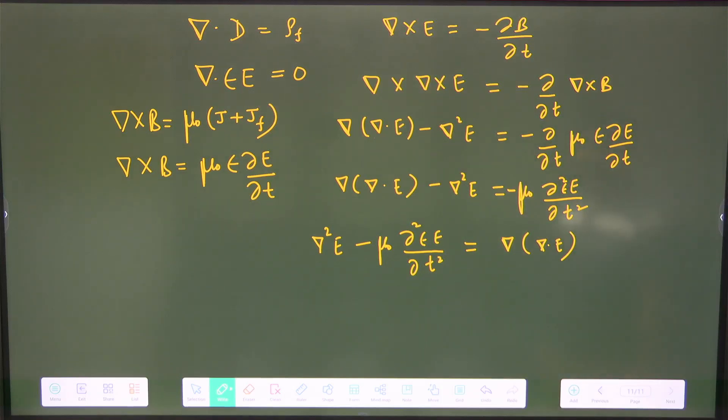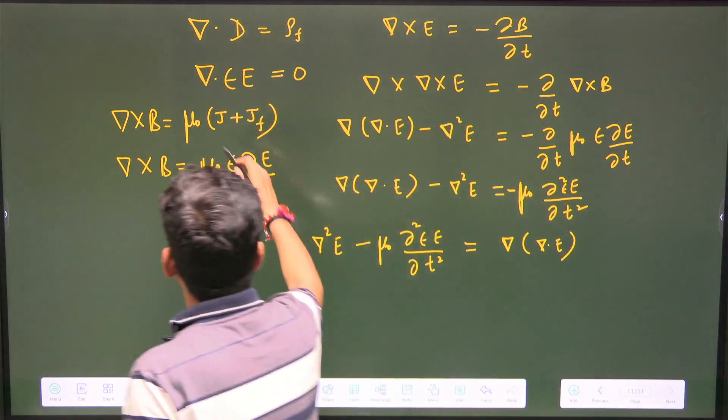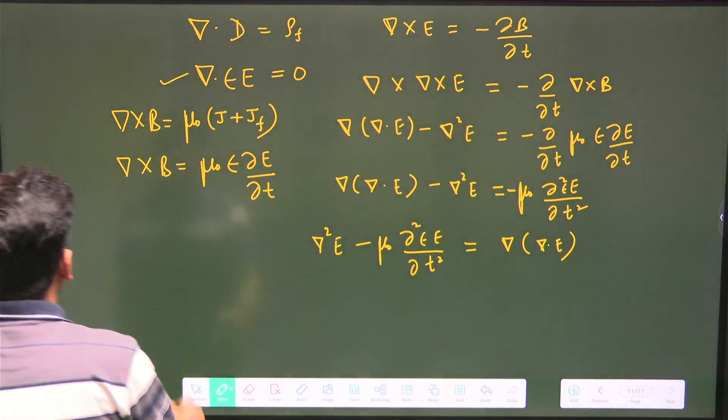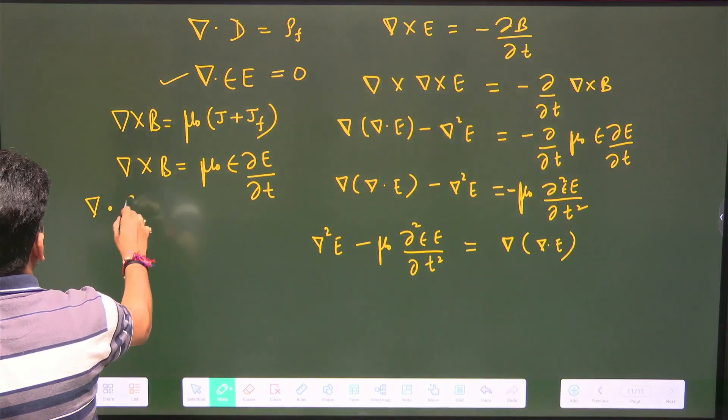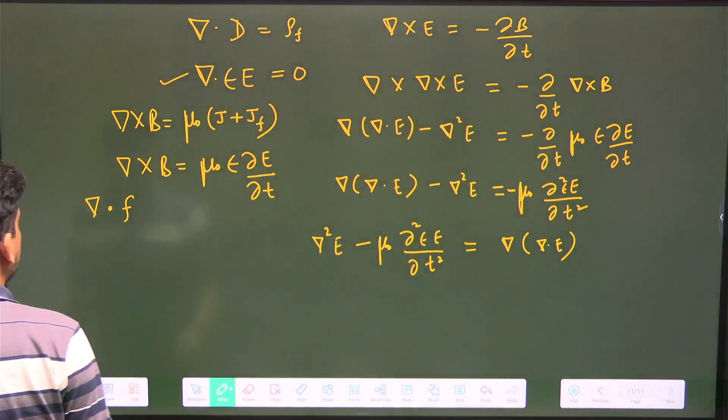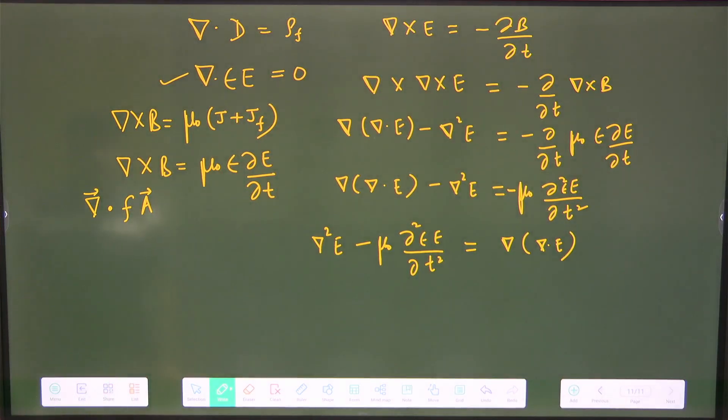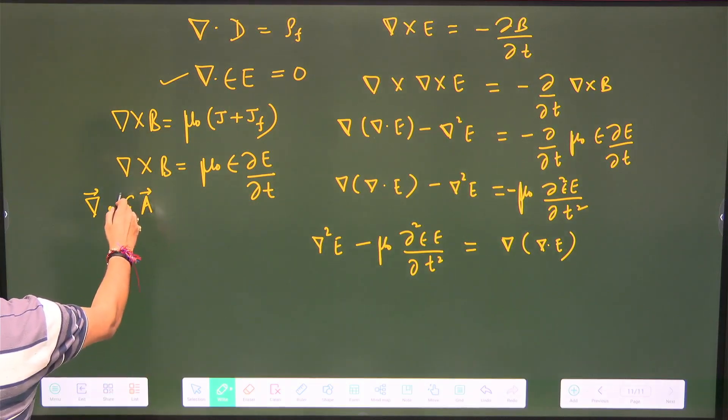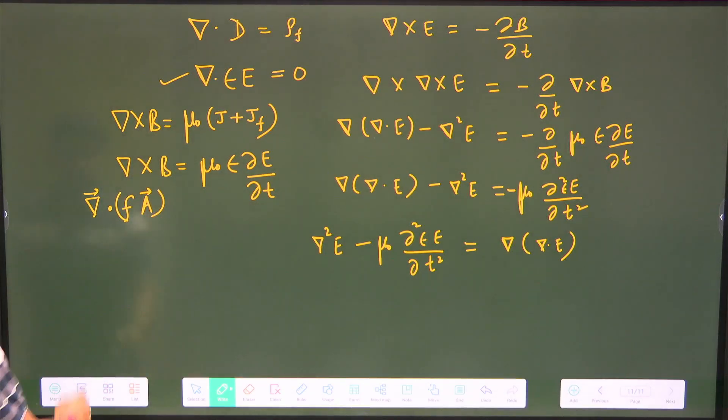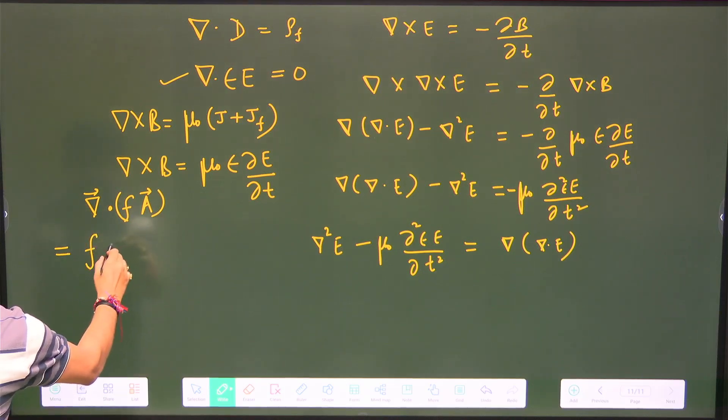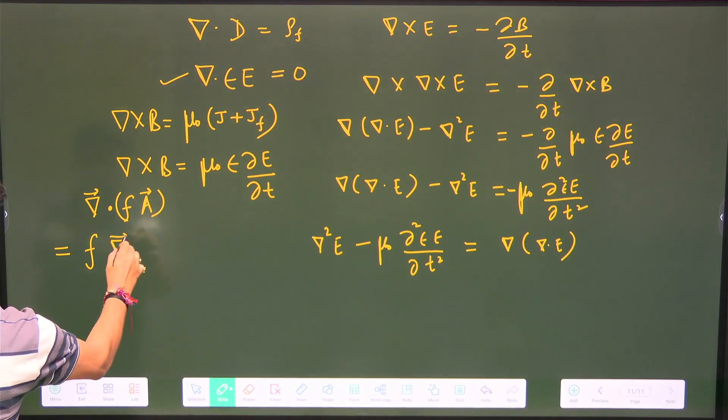Now just see the Gauss law. It is divergence of a scalar and a vector. This is a very interesting formula: divergence of a scalar into vector. The first one is the scalar times divergence of the vector.